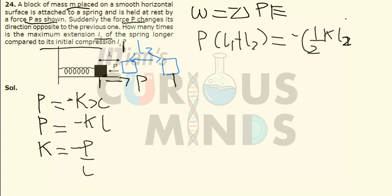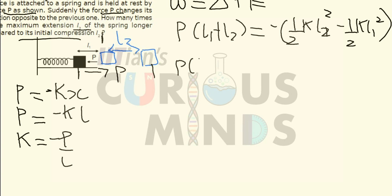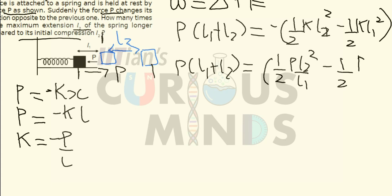Setting work equal to negative of the change in potential energy: P(l1 + l2) = half k l2 squared minus half k l1 squared. Substituting k = minus P over l1, this becomes P(l1 + l2) = half P l2 squared divided by l1 minus half P l1.